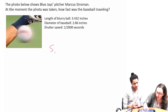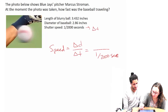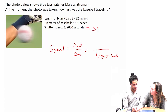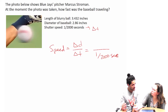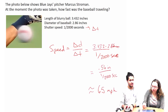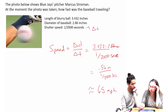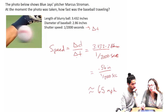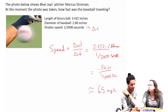Our speed is going to be change in distance over change in time. To find the change in distance, we take the length of the blurry region minus the diameter of the baseball. At the moment the picture was taken, the ball was traveling 65 miles per hour. I don't think it's at that exact moment, because we did incorporate a change in time, so it's over an interval — even if it's very small.